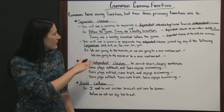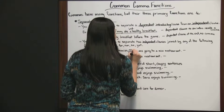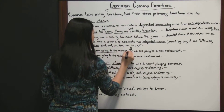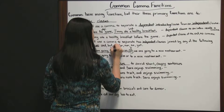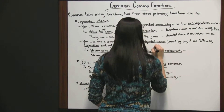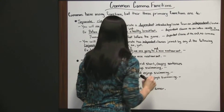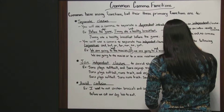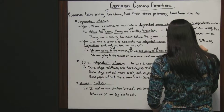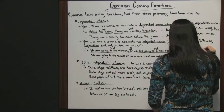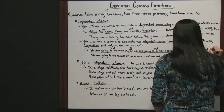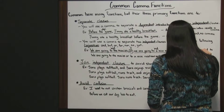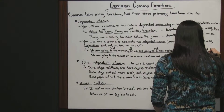'We are going to the movies, or we are going to a nice restaurant.' Here's our conjunction — 'or.' 'We are going to the movies' is an independent clause; 'we are going to a nice restaurant' is an independent clause. So the comma is needed to separate two independent clauses.